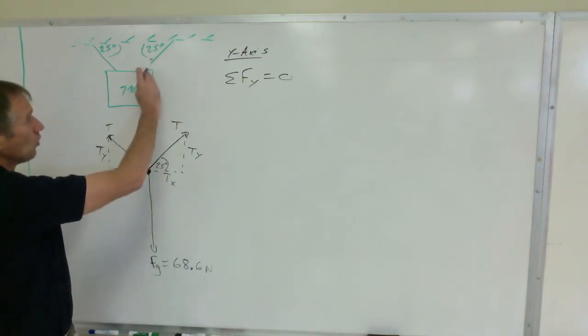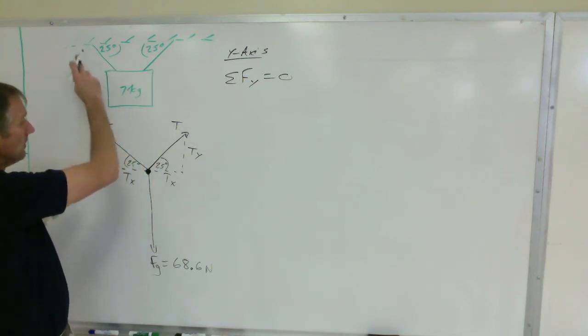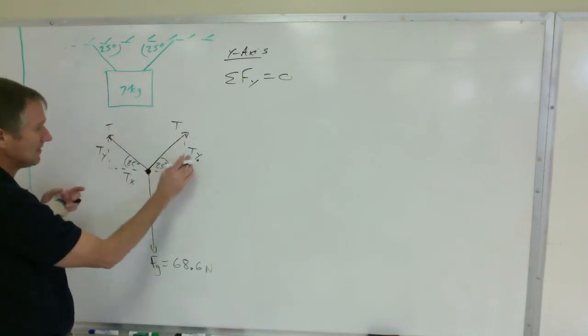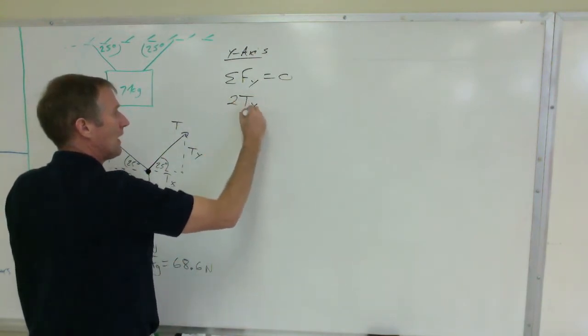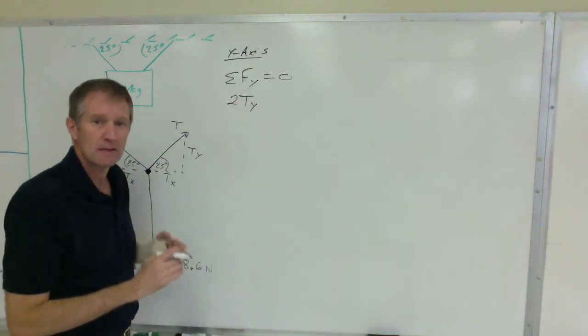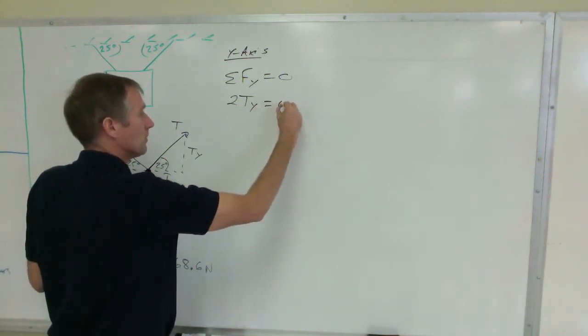That cable's pulling to the right and up. This cable's pulling to the left and up. It's not T, it's Ty. And you have two of them. 2Ty, not 2T, but 2Ty equals W.